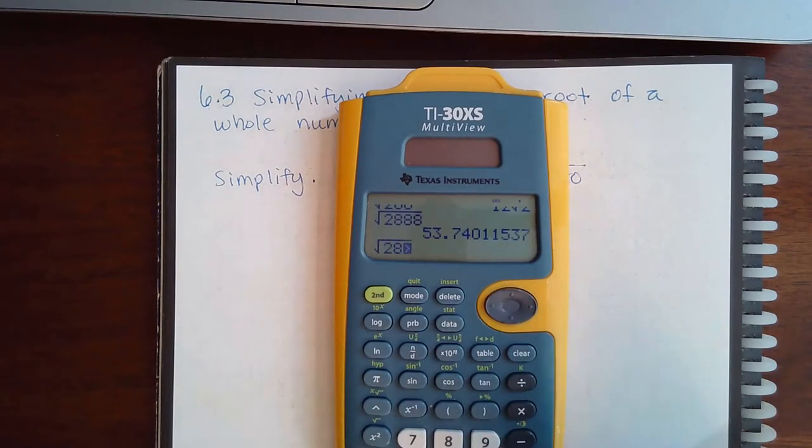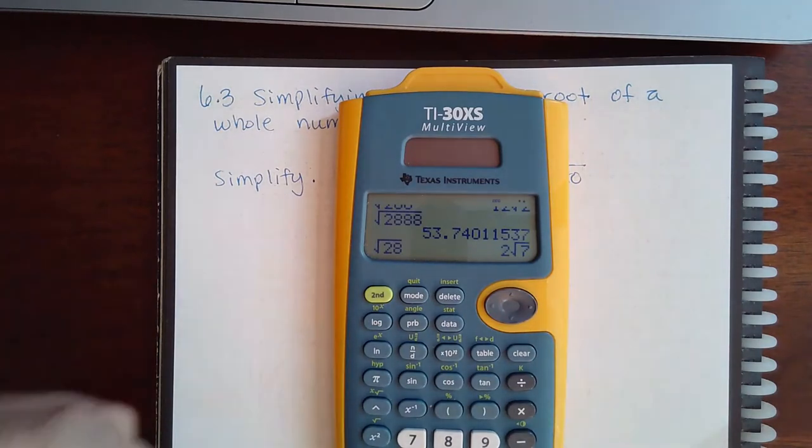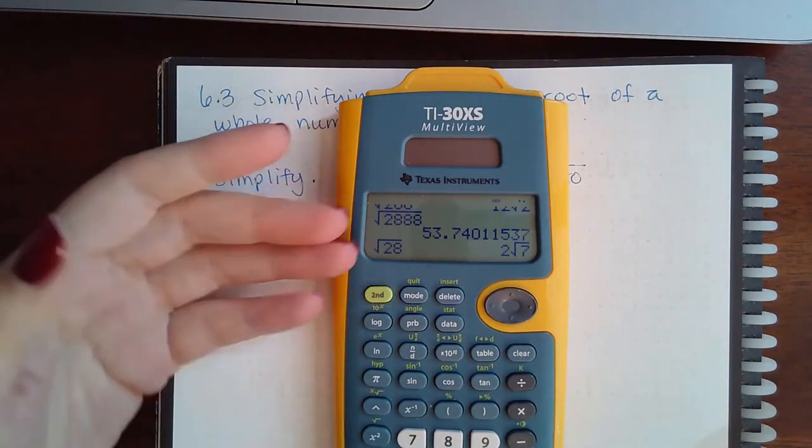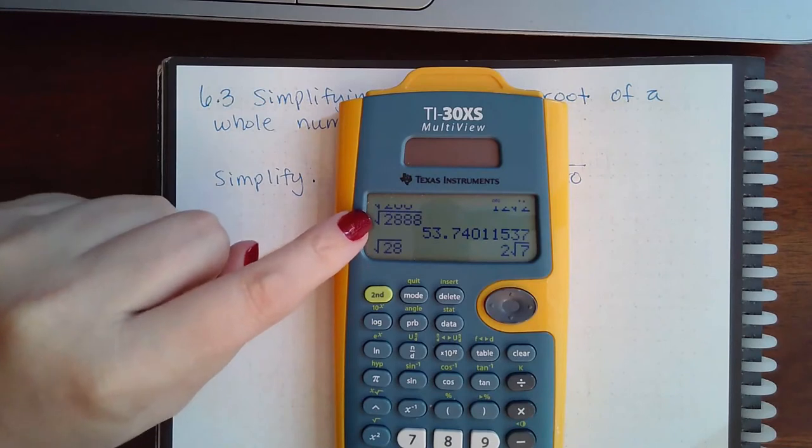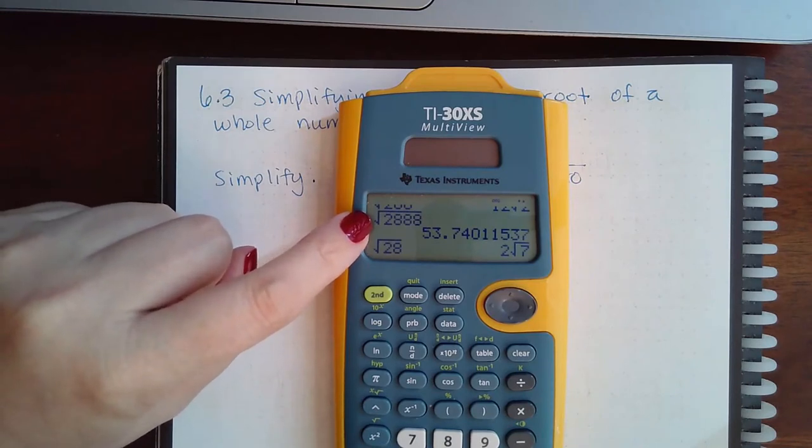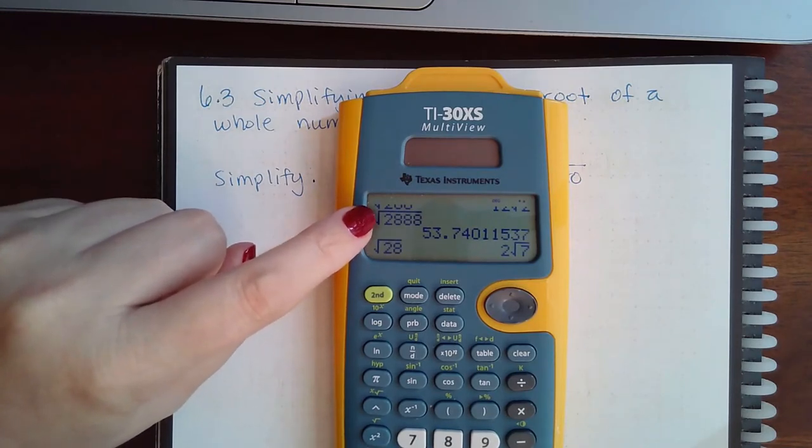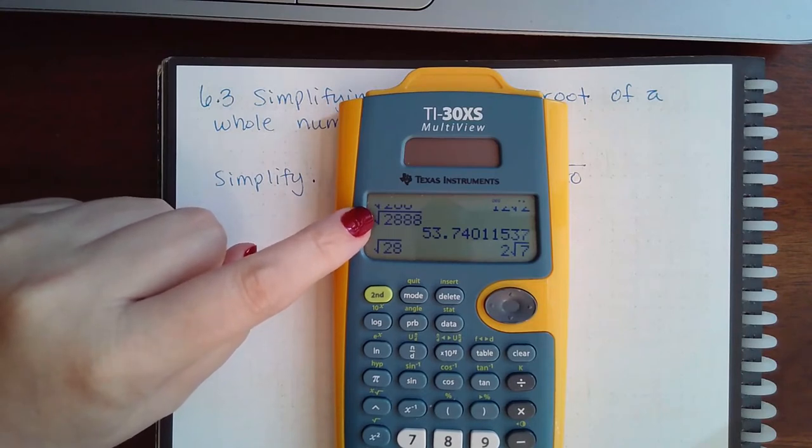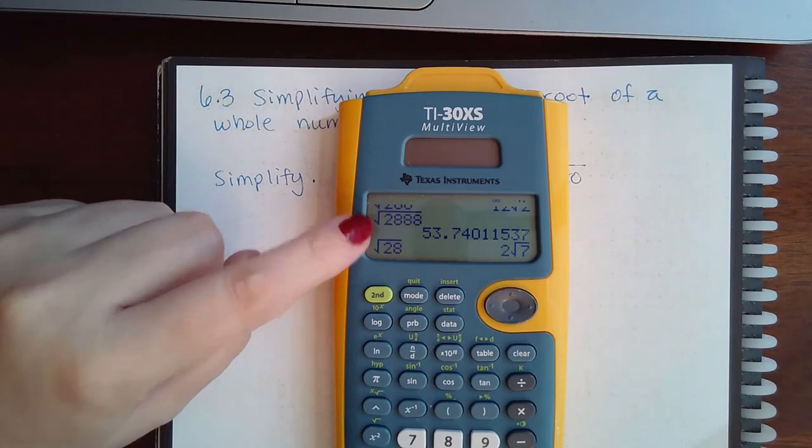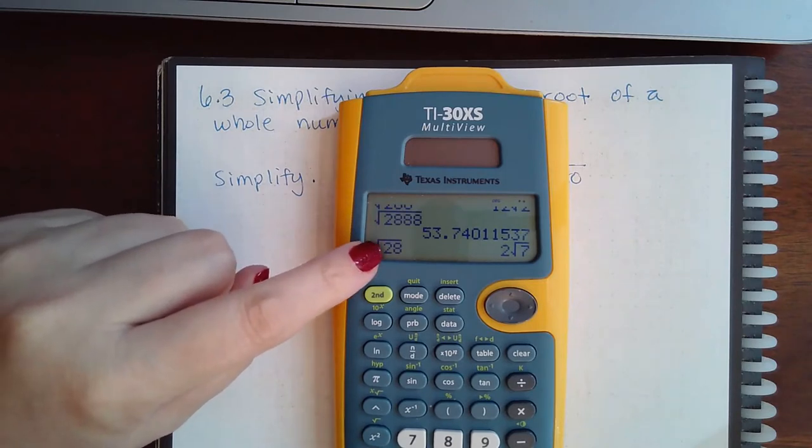For a small number like 28, it will give you the exact response. But you may in your future encounter the square root of a number greater than a thousand, and they will still want the exact answer.